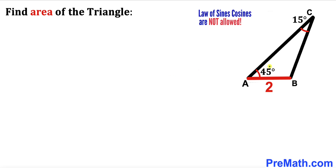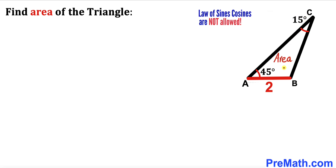Welcome to pre-math. In this video we have got this obtuse triangle ABC such that its base AB is 2 units, this angle BAC is 45 degrees, and this angle ACB is 15 degrees. Now we are going to calculate the area of this triangle ABC.